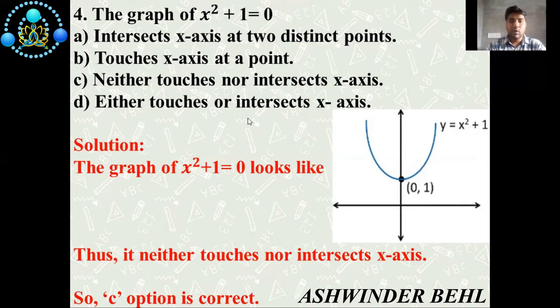Solution: If we see here the graph, you will see y = x² + 1. So graph of x² + 1 = 0 looks like this one. So it neither touches nor intersects x-axis. So c option is correct.